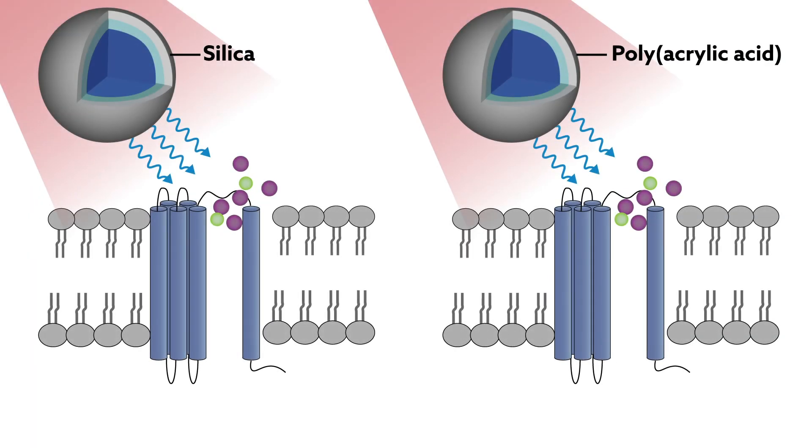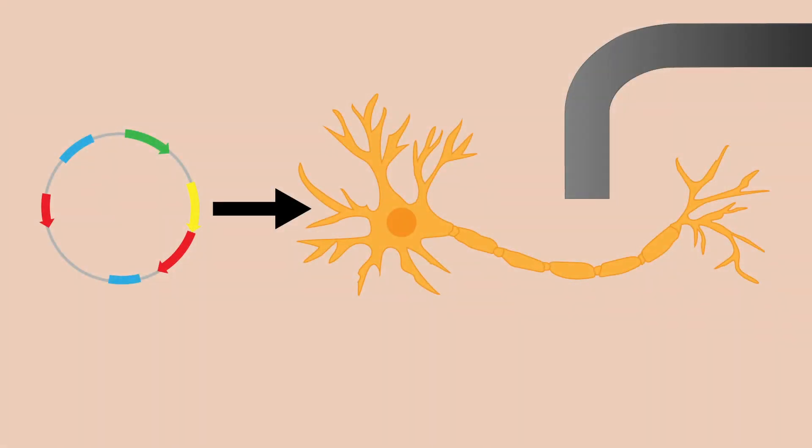The particles' outer coatings were also modified to improve their biocompatibility, thereby enhancing their safety. Although much testing is still needed before the technology can be used in human brains, the use of up-converting nanoparticles should allow researchers to safely explore nearly the entire mouse brain, opening the door to greater understanding of brain function and health.